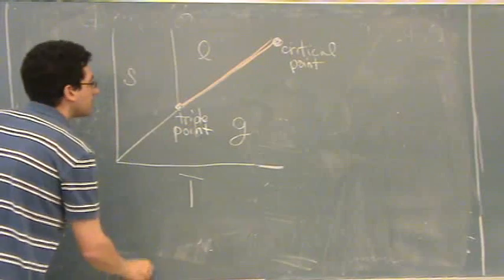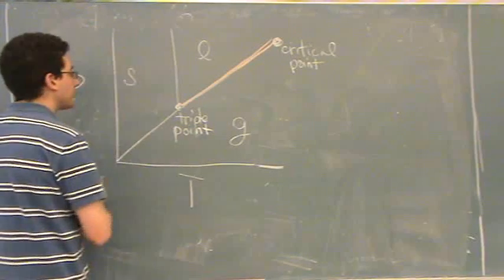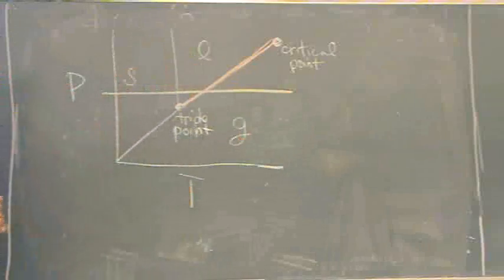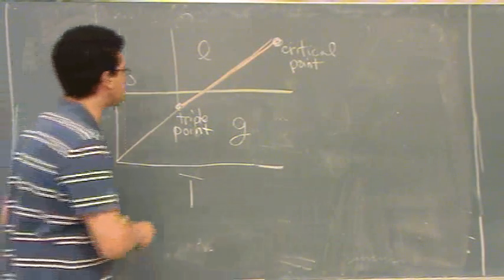And then, if you have a line that goes like this, if you have a line that goes like that, that's keeping the pressure constant. So we call this the isobar.